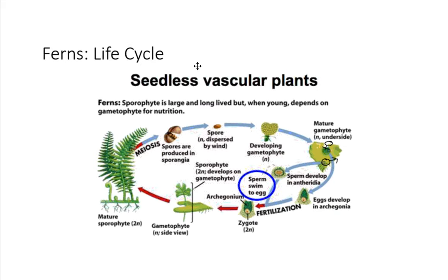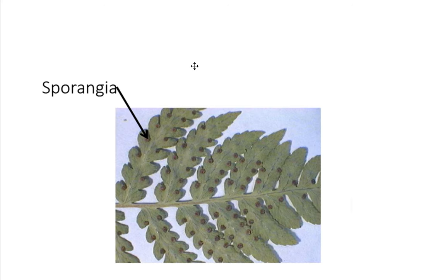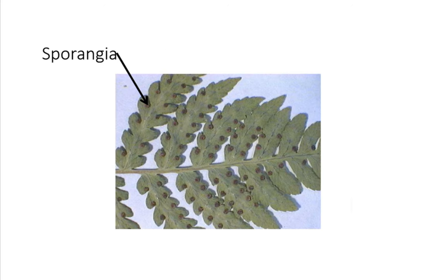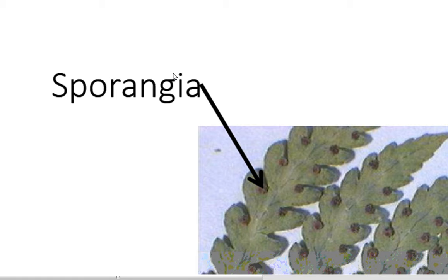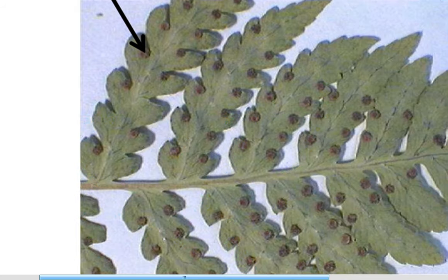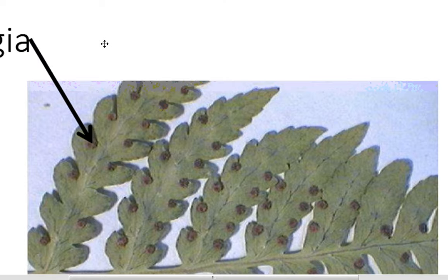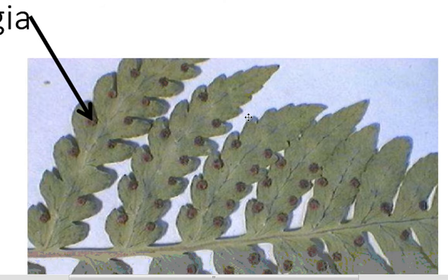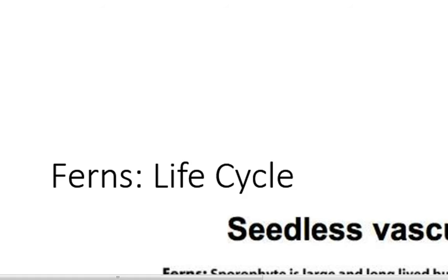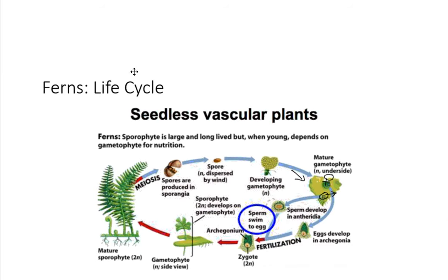Now the fern life cycle — vascular plants. A couple of structural differences, not a lot of vocabulary differences. The sporangia in ferns are actually located on the back of the sporophyte leaves, in these little structures you may have seen on ferns.